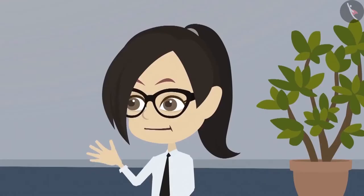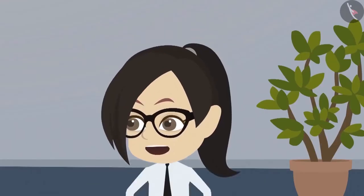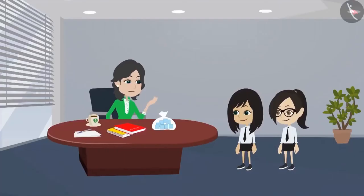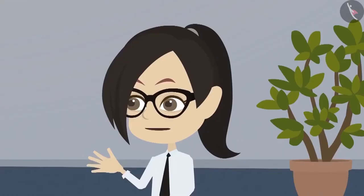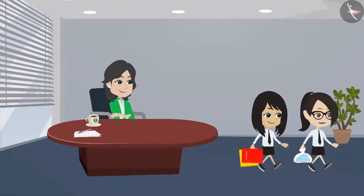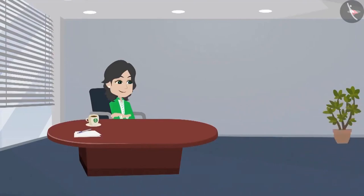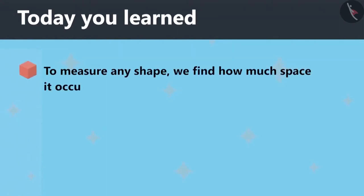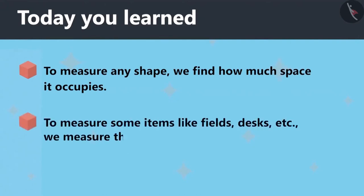Now I understand, madam. Can you give us these pieces? We will measure a lot of objects with them. Keep them and measure different objects. Thank you, madam — now we can measure many objects. Today you learned that to measure any shape, we find how much space it occupies. And to measure items like fields and desks, we measure the area they cover.